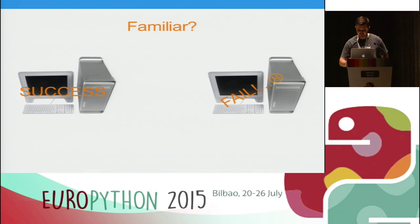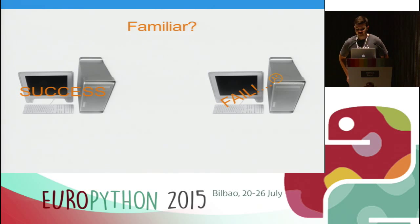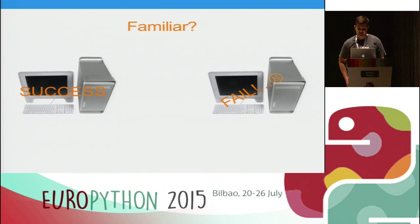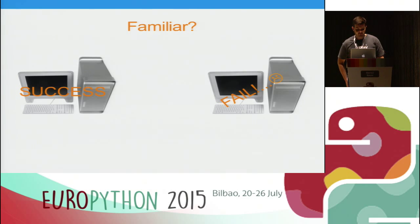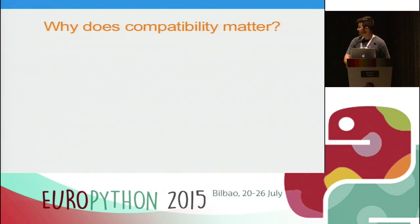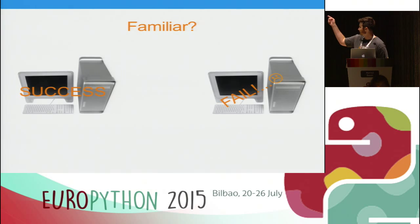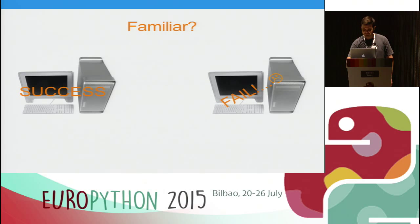Does this look familiar? You start developing on your own machine, it works fine, and so you decide you're going to push it to another computer — say it's a server, a GitHub repo, or another colleague that might be using it — and it fails.